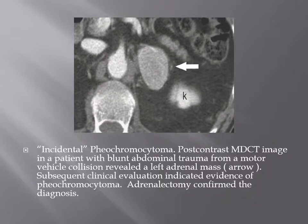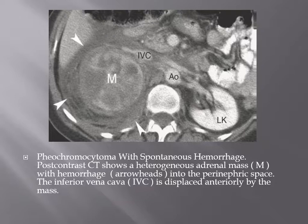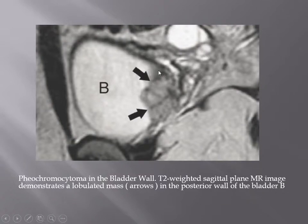An incidental pheochromocytoma was found in a patient after a road traffic accident, showing a left adrenal mass which was confirmed to be pheochromocytoma on clinical evaluation. Another case shows pheochromocytoma with spontaneous hemorrhage into the perirenal space, displacing the inferior vena cava and aorta anteriorly. A case of extra-adrenal bladder pheochromocytoma is shown in the bladder wall; T2-weighted MRI demonstrates a lobulated mass within the posterior wall of the bladder.